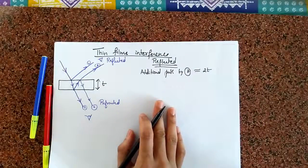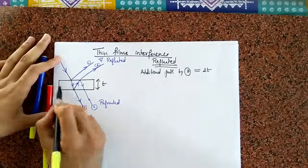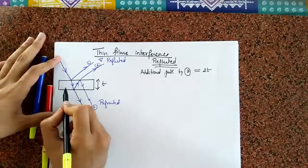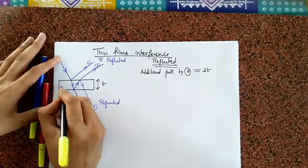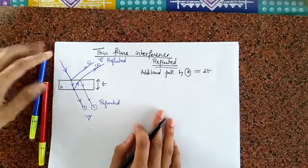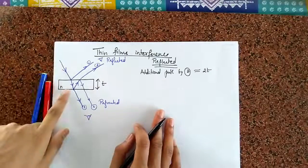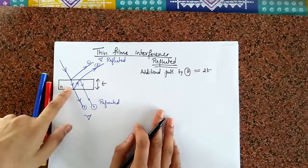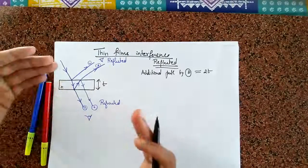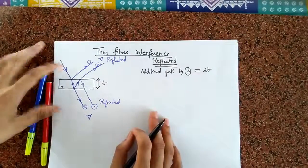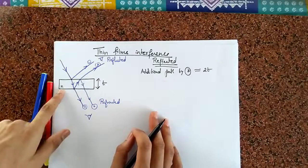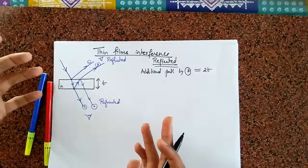But, we are forgetting something. What we are forgetting is that this particular film might have some refractive index, let's say N. And, when the beam of light enters from air, let's say, it enters into a medium which has a refractive index N, then its wavelength is going to get shorter. And, in fact, it's going to get shorter by a factor N.